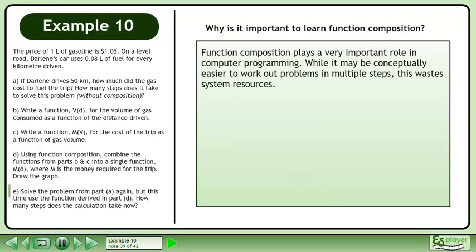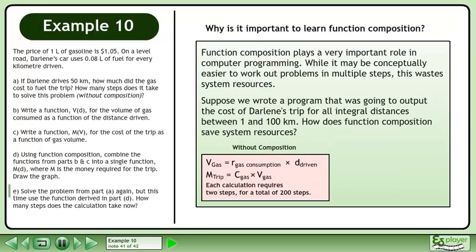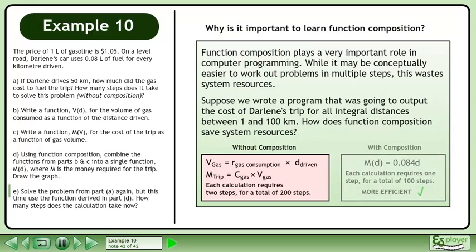Function composition plays a very important role in computer programming. While it may be conceptually easier to work out problems in multiple steps, this wastes system resources. Suppose we wrote a program to output the cost of Darlene's trip for all integral distances between 1 and 100 kilometers. Without using composition, each calculation requires two steps for a total of 200 steps. With composition, each calculation requires one step for a total of 100 steps — this is more efficient.